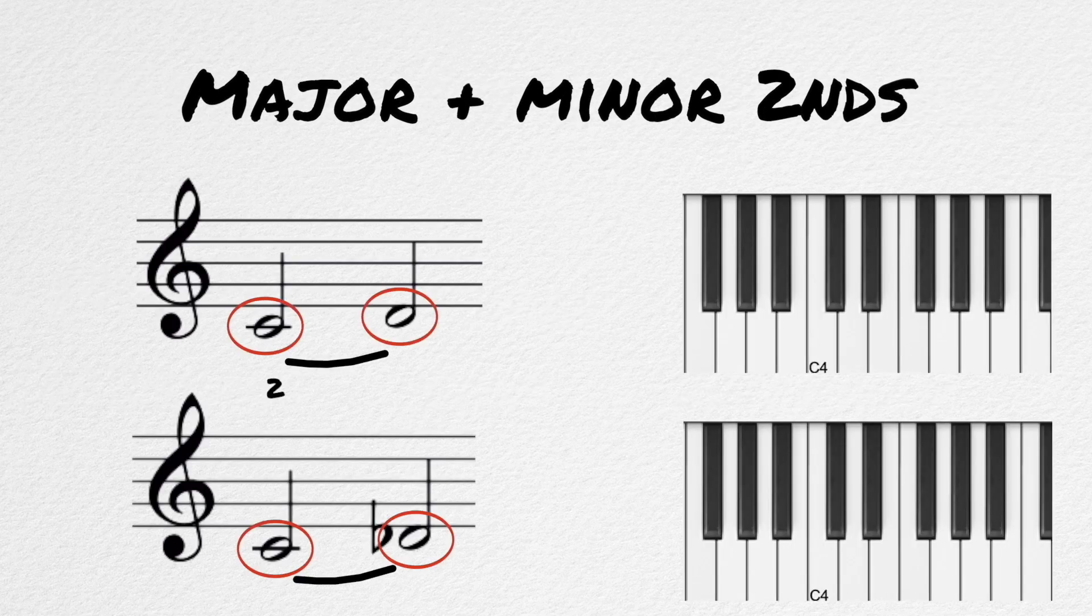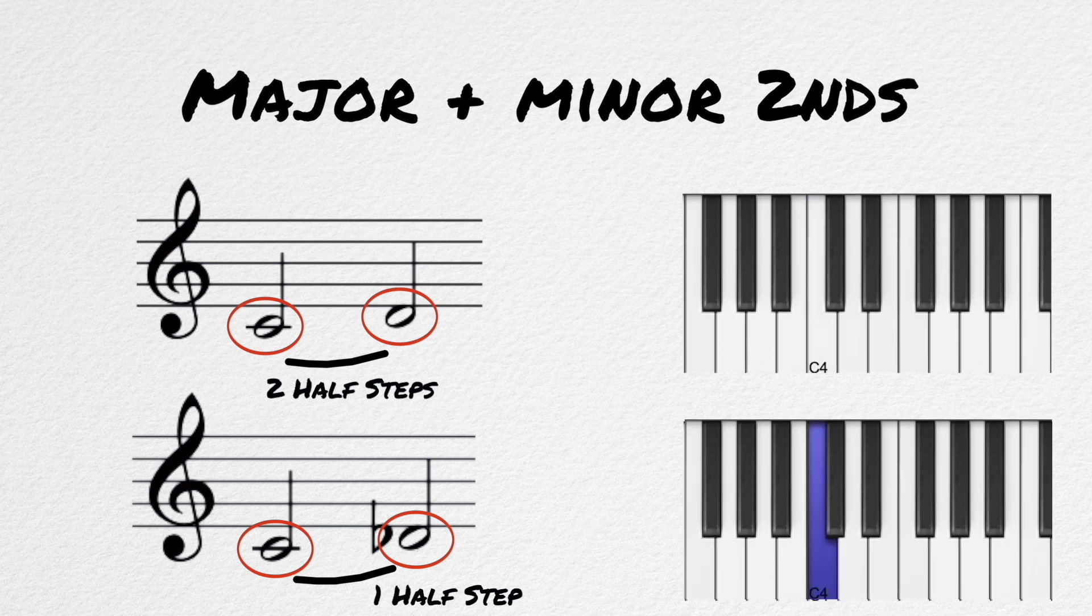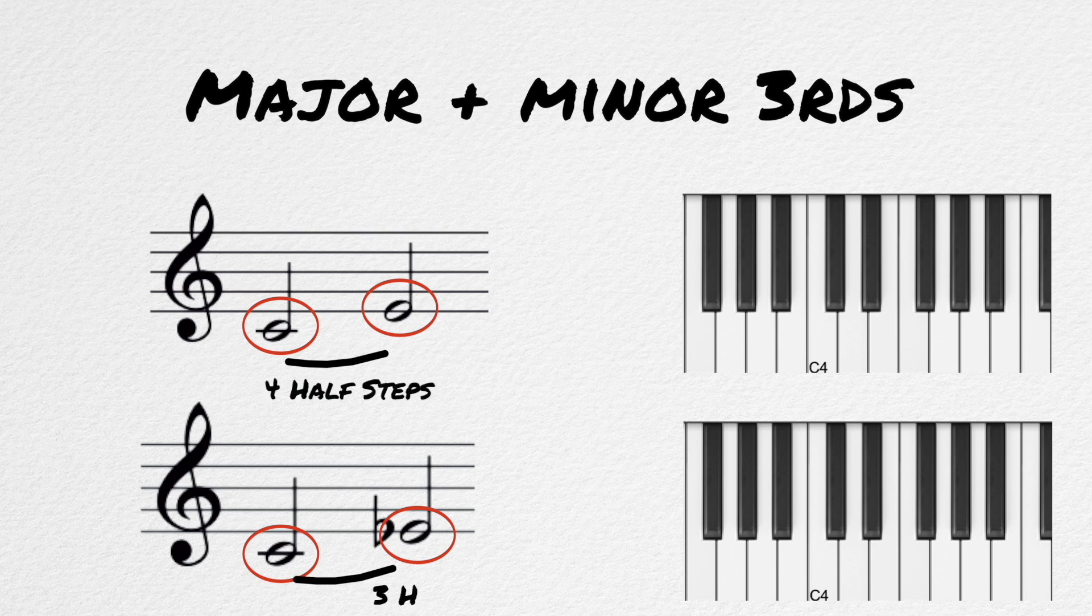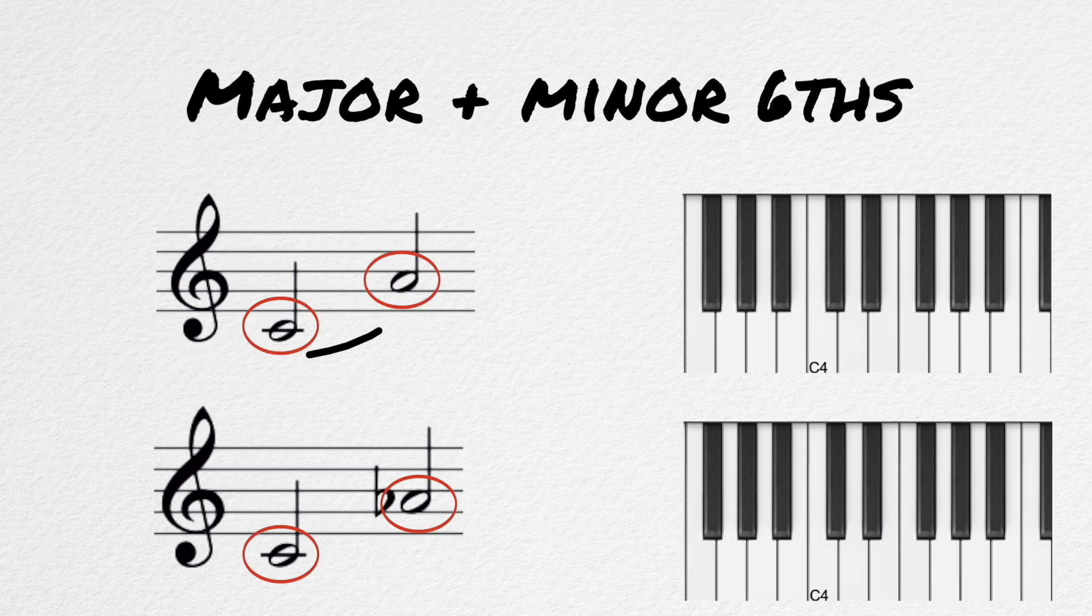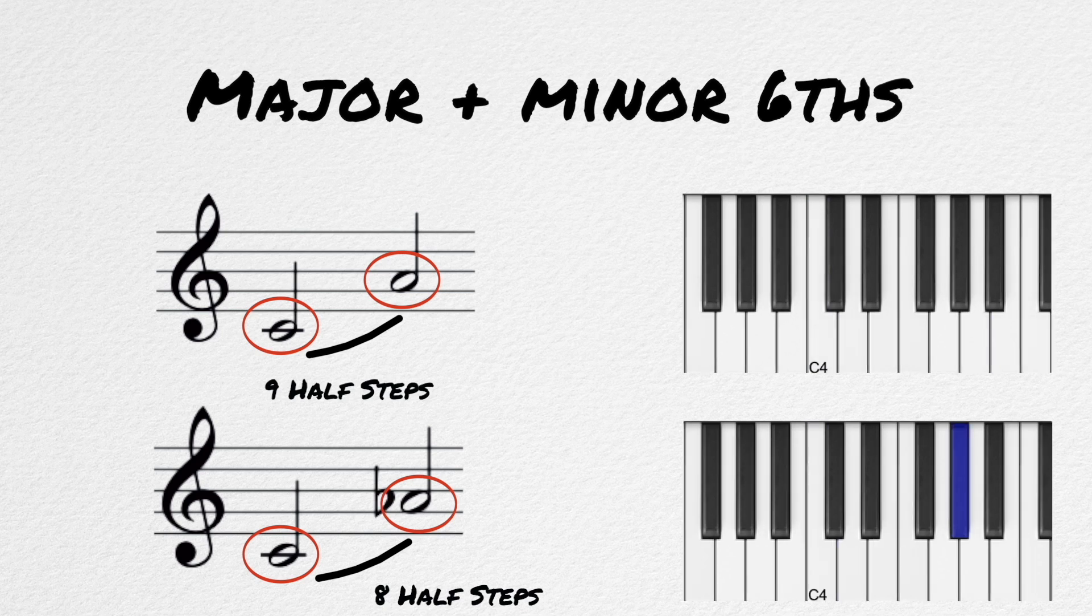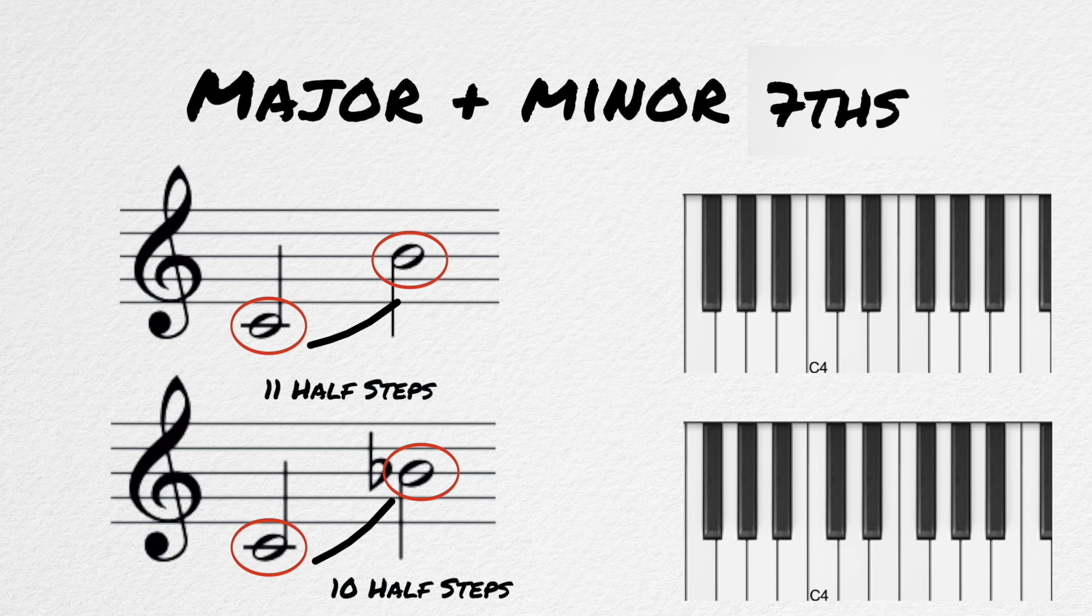A major 2nd is made up of 2 half-steps, and a minor 2nd is made up of 1. A major 3rd is made up of 4 half-steps, and a minor 3rd is made up of 3. A major 6th is made up of 9 half-steps, and a minor 6th is made up of 8. And a major 7th is made up of 11 half-steps, and a minor 7th is made up of 10.